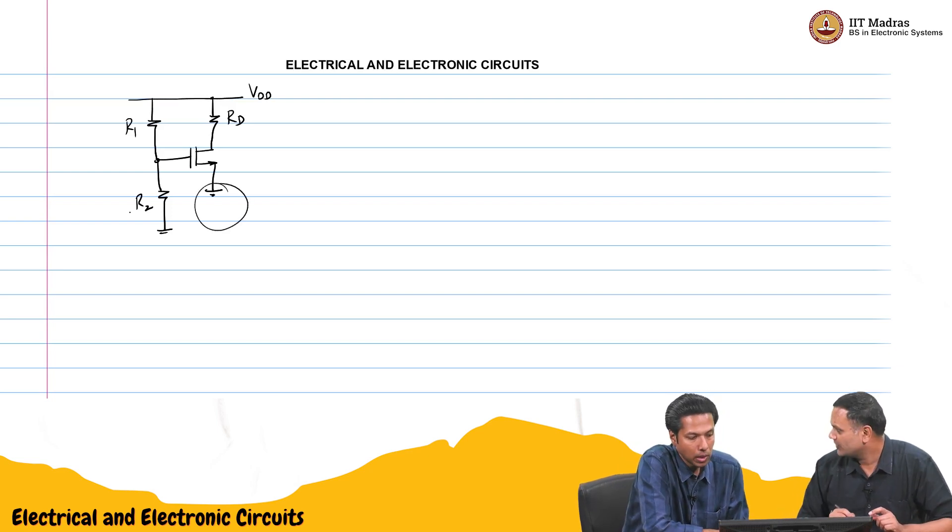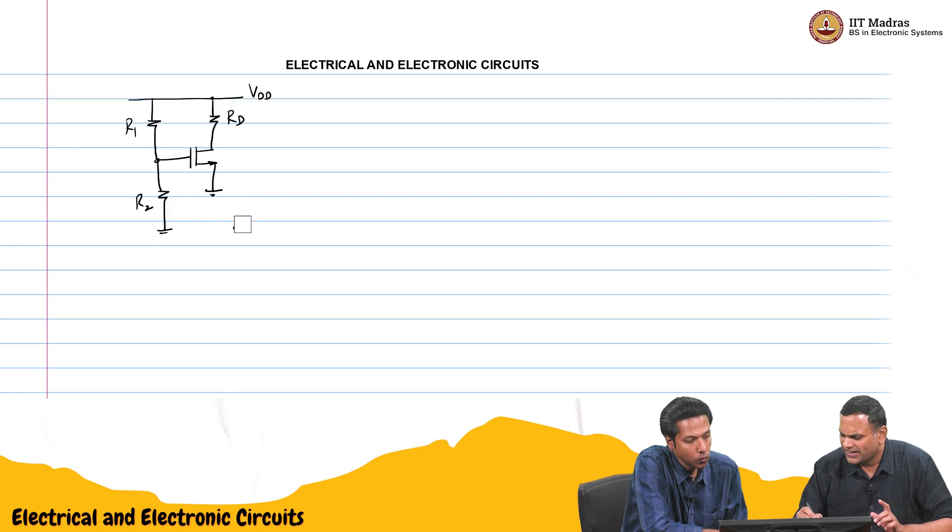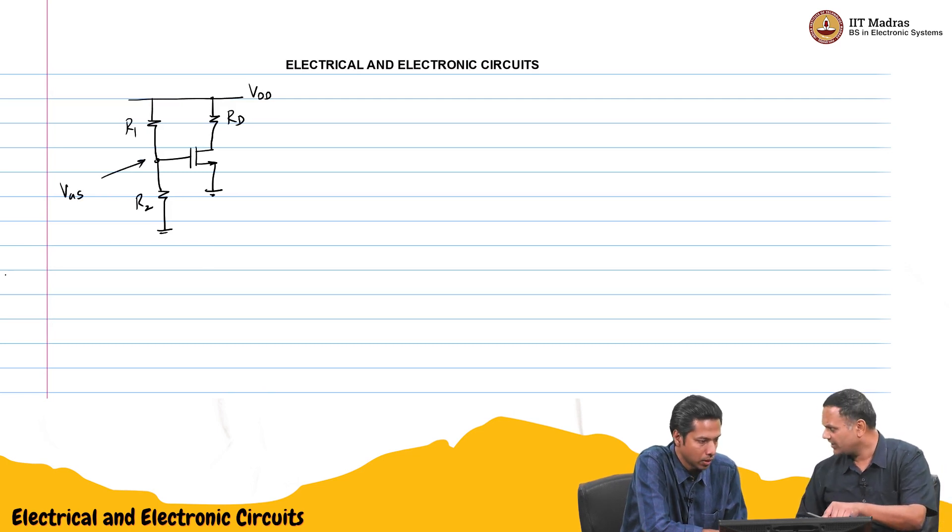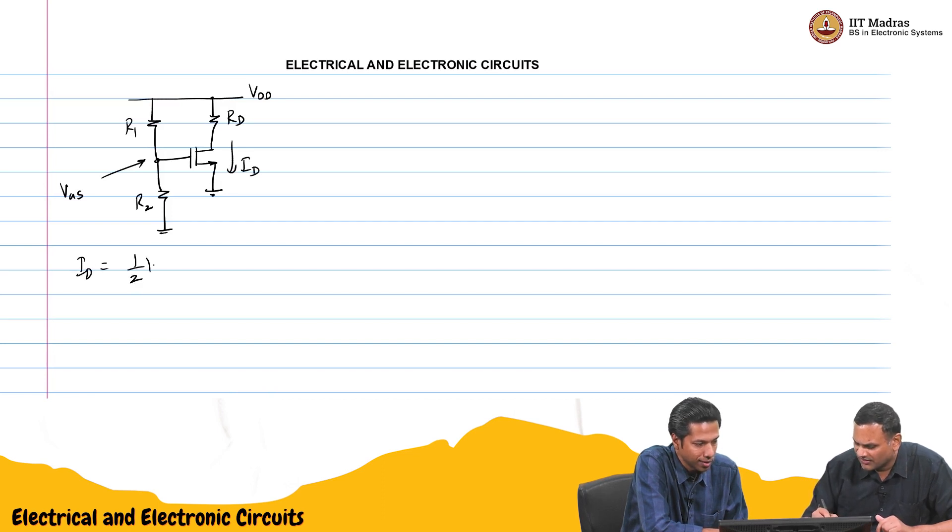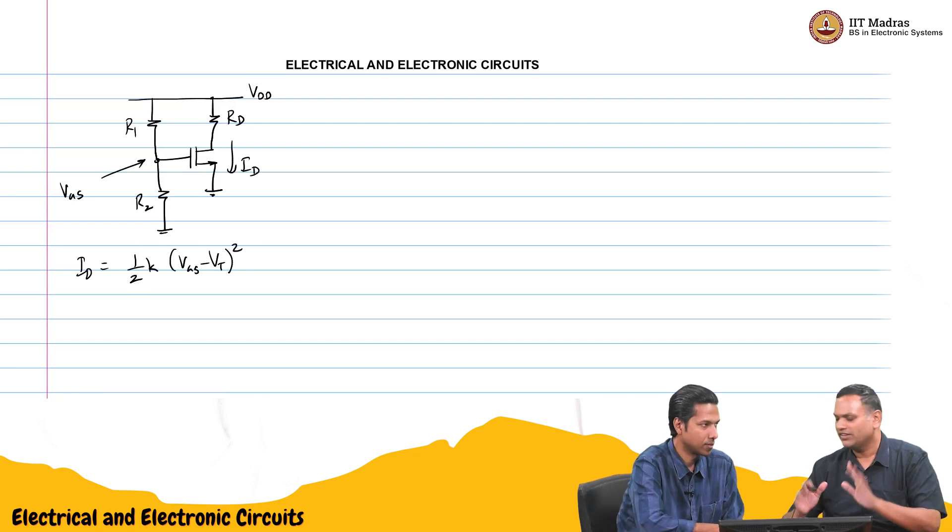Once you know the gate source voltage, we calculated it. It is R2 by R1 plus R2 times Vdd. You can find out the current, you can find out everything about the amplifier. Id was just half K into Vgs minus Vt the whole square. The drain voltage is Vdd minus IdRd, you can calculate all of that.